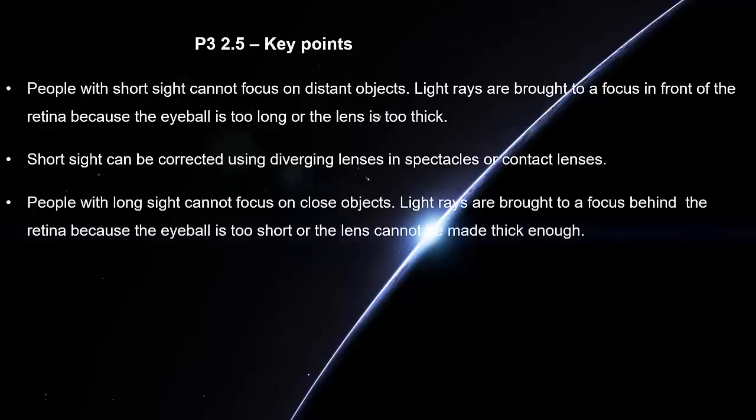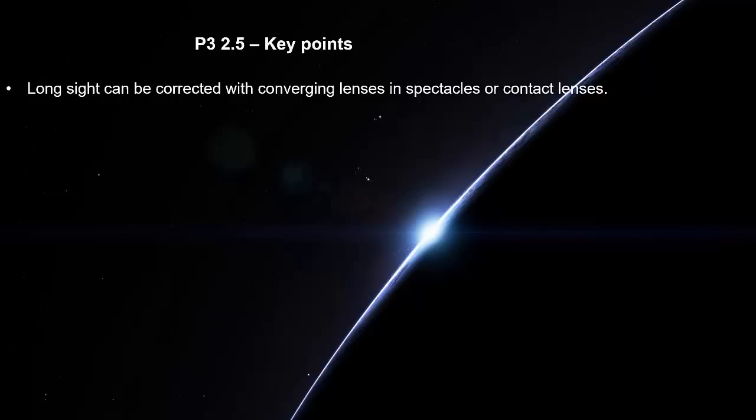The power of a lens is measured in diodes. People with long sight cannot focus on close objects. Light rays are brought to a focus behind the retina because the eyeball is too short or the lens cannot be made thick enough. Long sight can be corrected with converging lenses in spectacles or contact lenses. The power of a lens is measured in diodes.